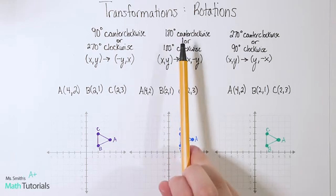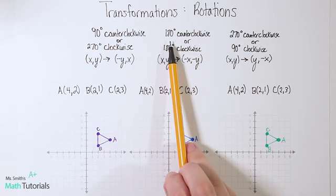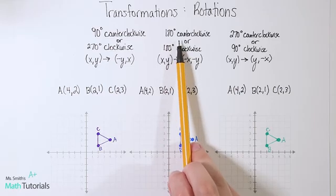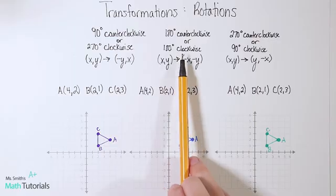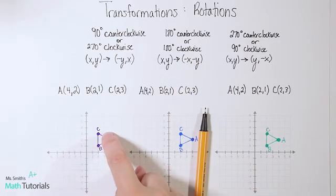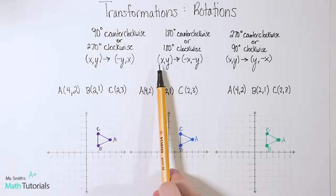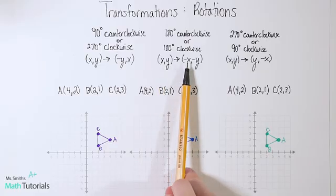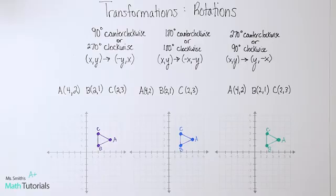Our second type of rotation is 180 degrees. It doesn't matter whether it's 180 degrees counterclockwise or 180 degrees clockwise — you still get to the same place. The rule is: (x, y) becomes (-x, -y). We are just flipping the signs of our x and our y.